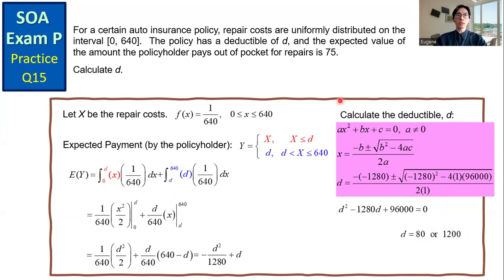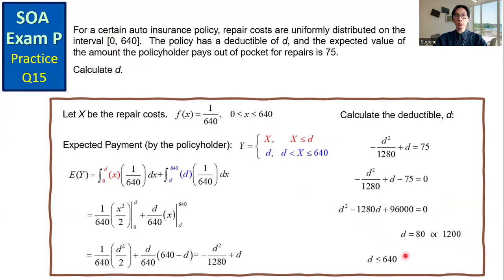Since the repair cost is between 0 and 640, the value of D should be less than or equal to 640. Therefore, the answer is 80. The deductible amount D is $80.